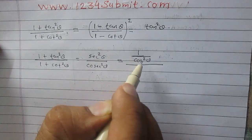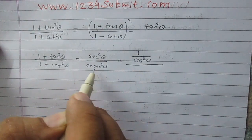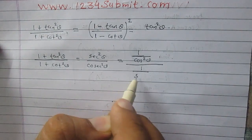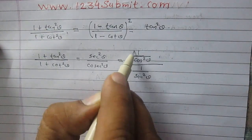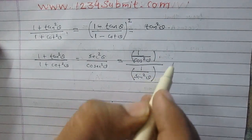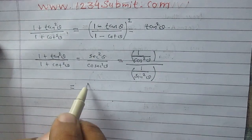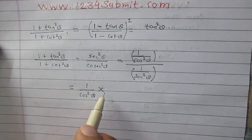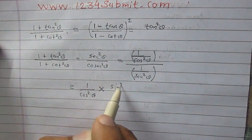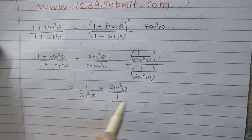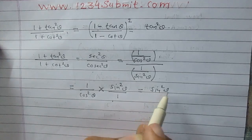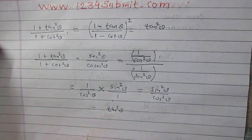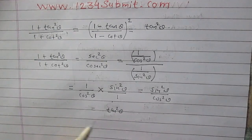Similarly, as we know that cosecθ and sinθ are reciprocal of each other, cosec²θ can be written as 1 / sin²θ. So the expression becomes: numerator is 1 / cos²θ, multiplied by the reciprocal of the denominator which is sin²θ. This gives sin²θ / cos²θ, which is tan²θ.